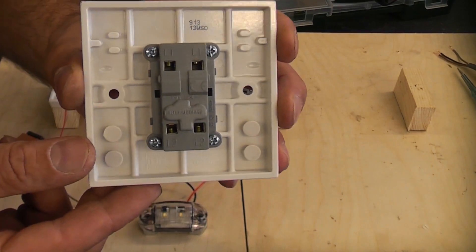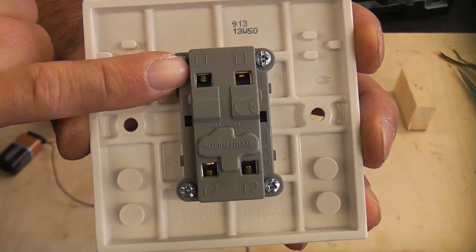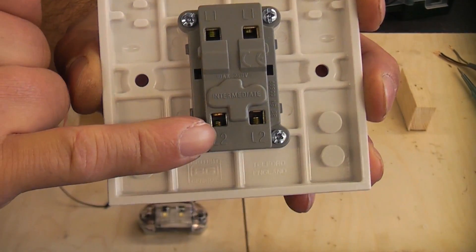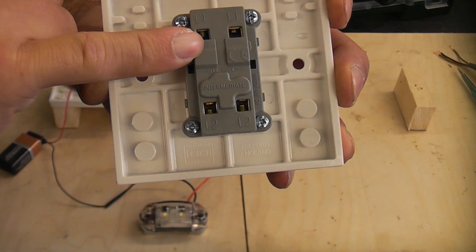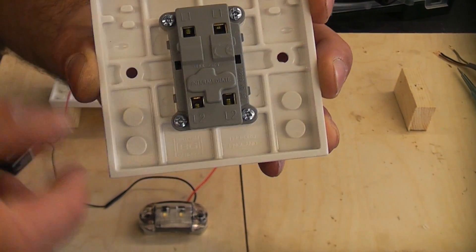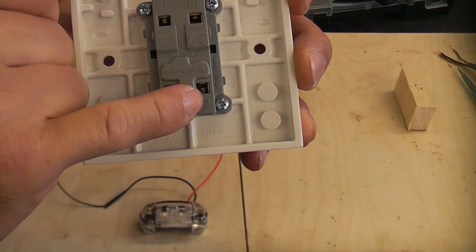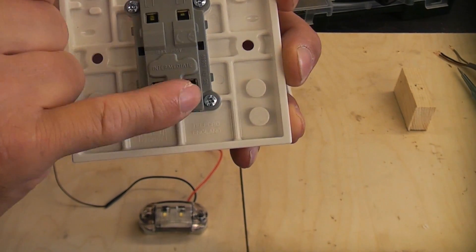An intermediate switch looks like that. So at the top there we have L1 L1 and at the bottom L2 L2. That switch has a straight through contact that goes straight through in one position. When you flick the switch it actually crosses over both of the contacts.